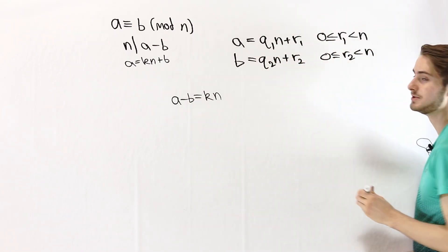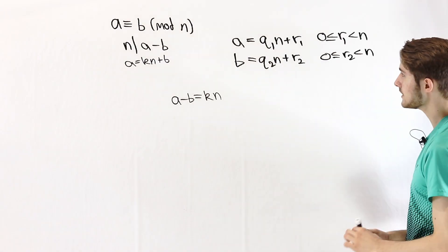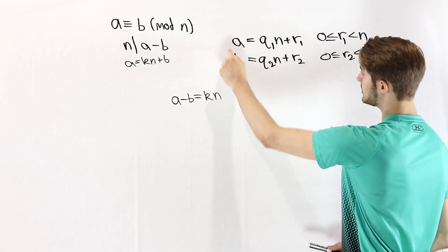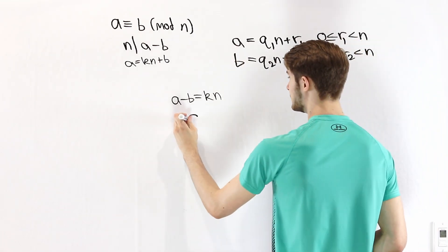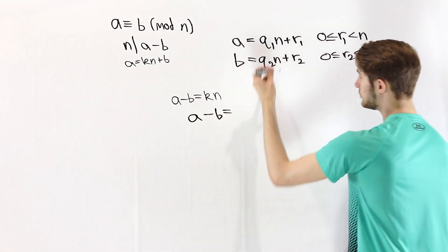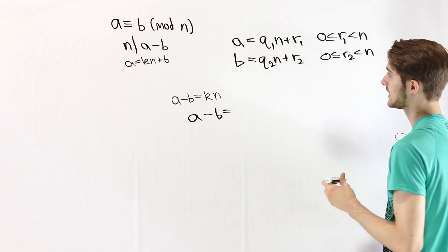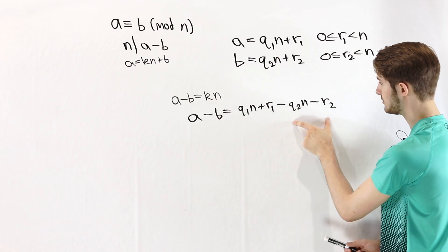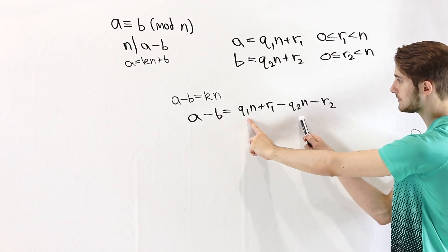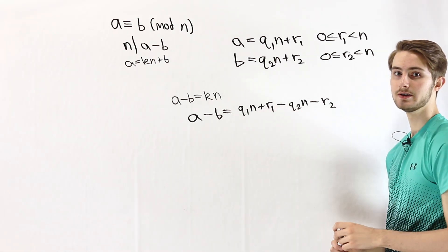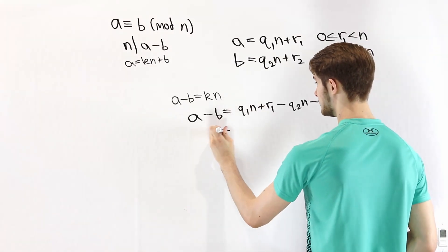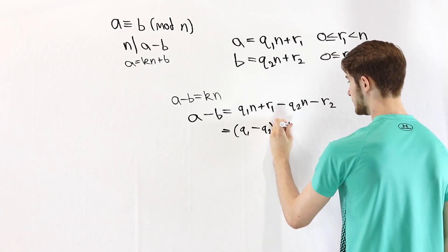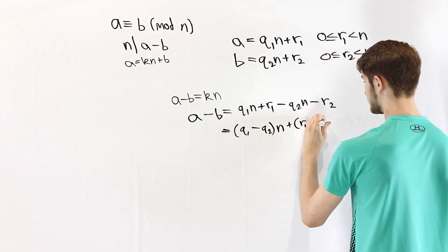Now we can think about what A minus B is in terms of these two expressions. A minus B equals the expression for A minus the expression for B. Notice that two different parts are multiplied by N, so we can group those together: we get Q1 minus Q2 times N, plus R1 minus R2.